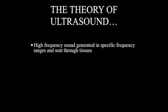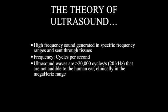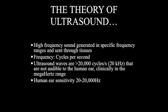Ultrasound is a high-frequency sound generated in specific frequency ranges sent through tissues. The signal bounces back to the transducer and is interpreted. The waves are in the range of 20,000 cycles, or kilohertz per second, and it's not audible to the human ear. Clinically, it's in the megahertz range. Human ear sensitivity is from 20 to 20,000 hertz. Diagnostic ultrasound typically ranges from 2.6 to 14 megahertz.